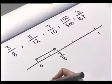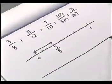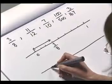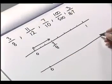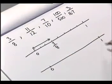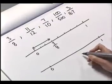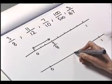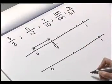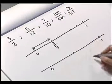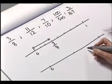Let's have a look at another one. This time we'll look at eleven twelfths, so we need to divide our line up into twelve pieces of equal size.